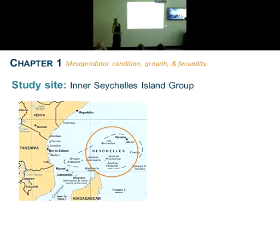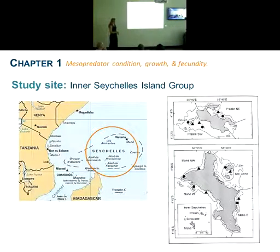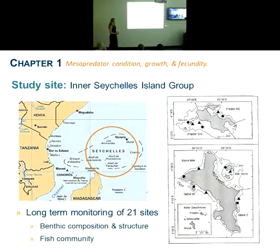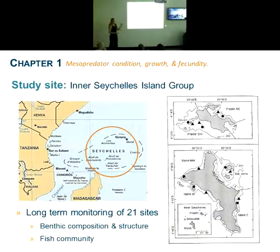The study site for this chapter is the Seychelles, the Inner Island Group — an island nation just to the northeast of Madagascar. On two islands, Mahé and Praslin, there are 21 sites that have been the subject of a long-term monitoring project since 1994, with benthic composition, structure, and fish community monitored up until the present day. The value of this monitoring system is that starting in 1994, it covers the period prior to and following the 1998 mass bleaching event, which had particularly strong effects in the Western Indian Ocean — documenting the initial state of the reefs and the trajectories of recovery and decline following the bleaching.